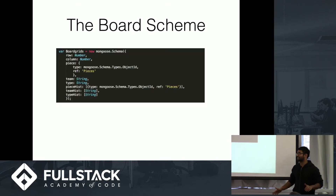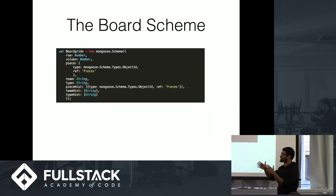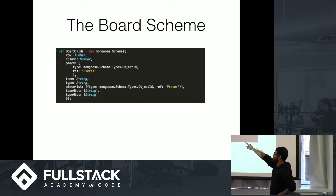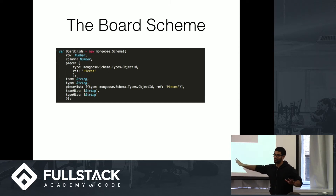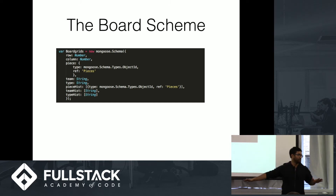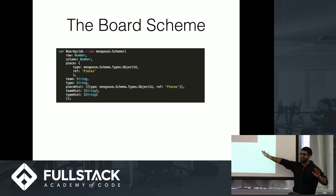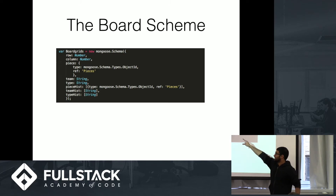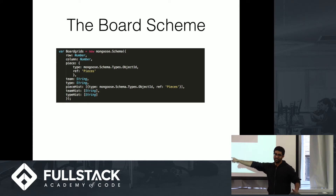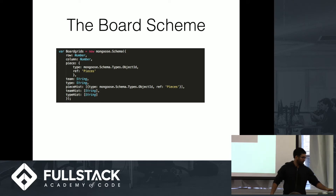This is the board schema. For each one of those squares, you have row, column, the piece associated, the team, and the type. I'm not going to get too much more into that, but just remember that each one has a row and a column number, and the team and the type.